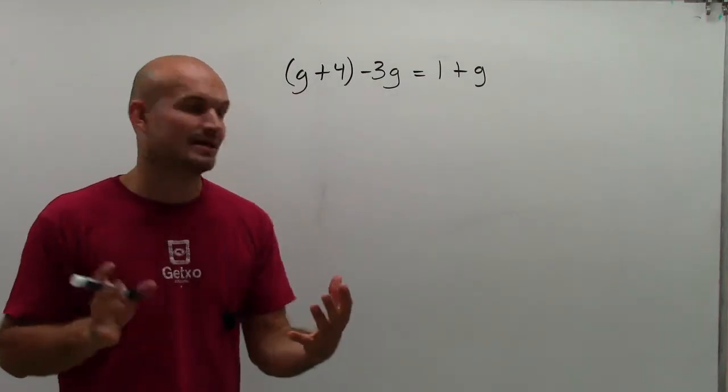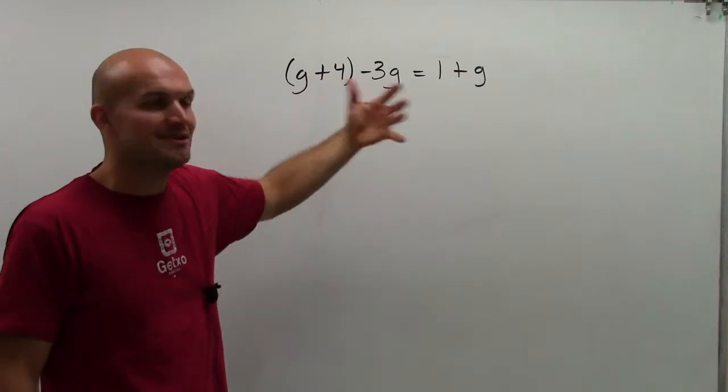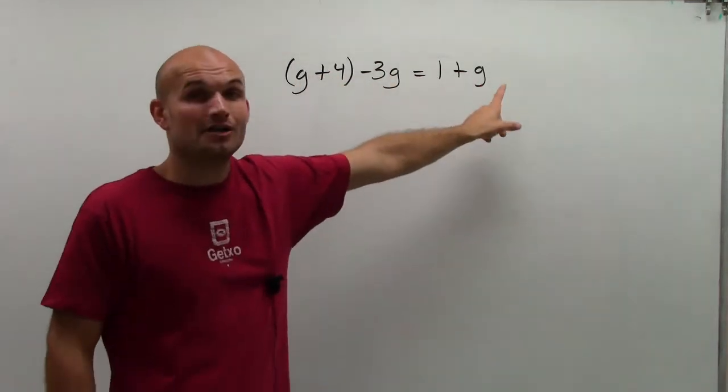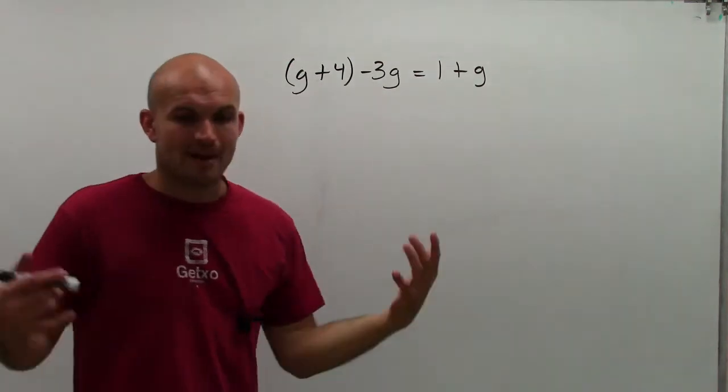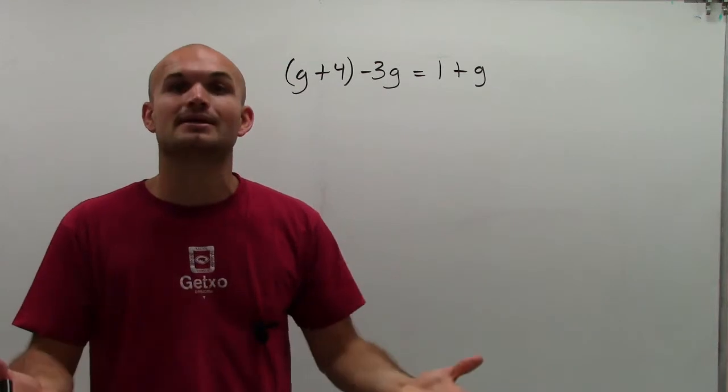You look at it and say, how many variables do I have? I have a g here, a g here, and on the other side of the equal sign, I have a g there. So I need some way to get these all together on the same side so I can combine them.